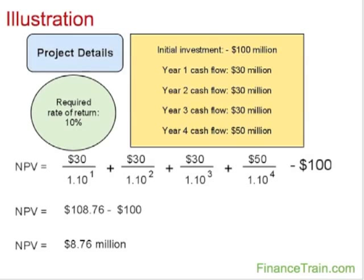Let's take a simple example to illustrate the calculation of NPV. Assume that your company is looking at investing $100 million in a capital project. The project will return post-tax cash flow of $30 million for 3 years and $50 million for the 4th year. Assume a discount rate of 10%.